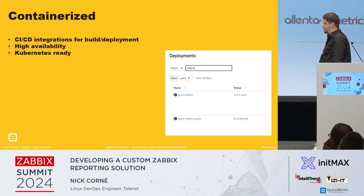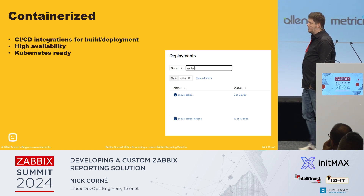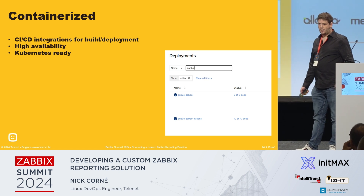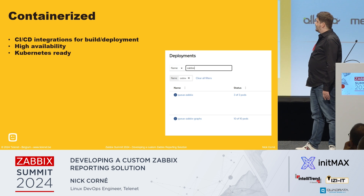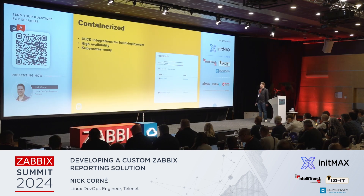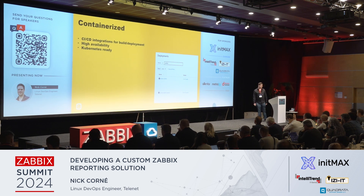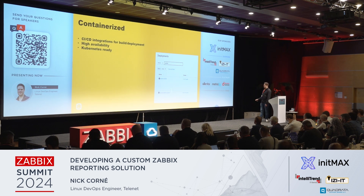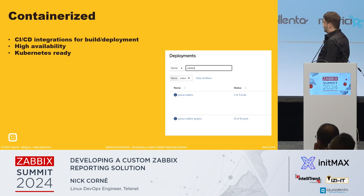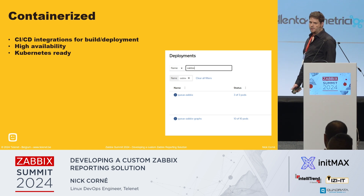And the last requirement is containerized. We want it to be future-proof, Kubernetes-ready, so it can run everywhere — in the cloud or on-premise. We are using OpenShift. It's also highly available and we have built-in CI/CD integration, so when we have updates or quick fixes, everything gets built and deployed automatically. For scalability, we use different queues — one for the rendering of the graphs and one for the report generation itself — so we can just scale up the pods easily to handle more simultaneous loads.